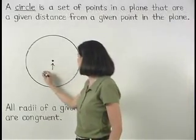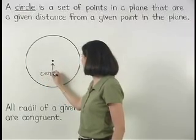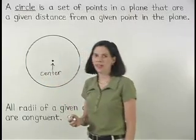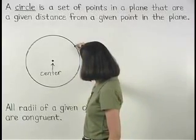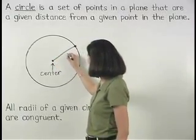And the given distance from any point on the circle to the center is called the radius of the circle.